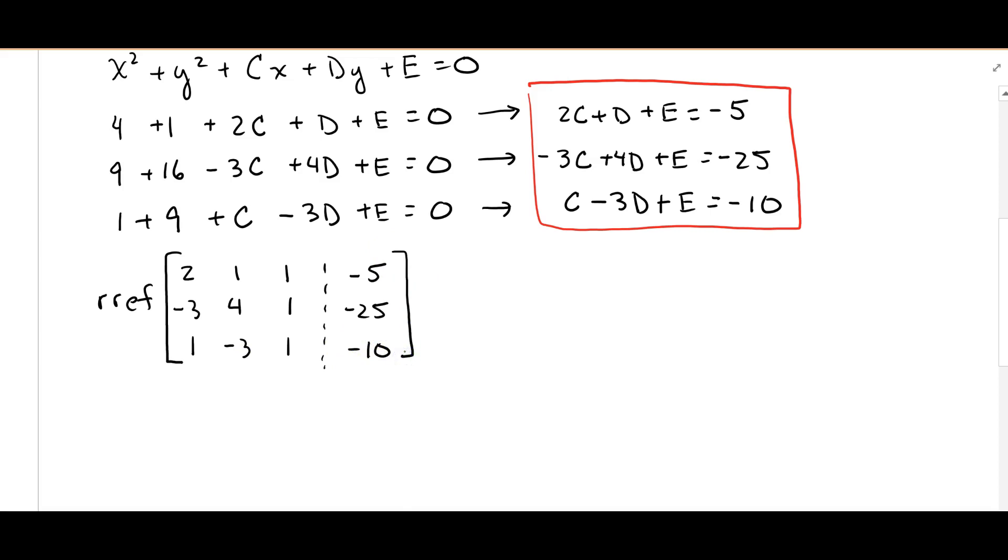All right and when we enter all this into our calculator we'll enter this into one of our matrix variables and then you perform the reduced row echelon form function on that matrix. After you plug this in you're going to get some weird decimal answers.